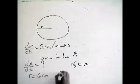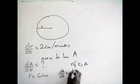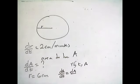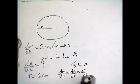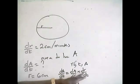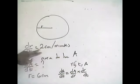Using chain rule with those three variables, dA over dT equals dA over dR multiplied by dR over dT. When you look at dR over dT, we have that information — it's given. And for dA over dR, we don't have that directly, but we can find it.